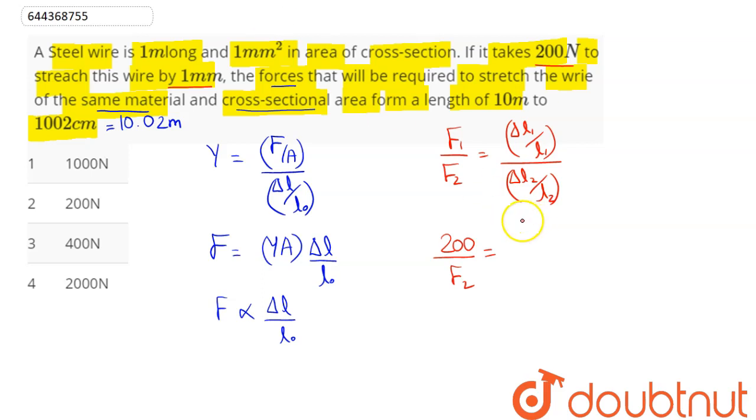That is 1 millimeter is 10 power minus 3 meter divided by additional length of 1 meter. This is 1 meter divided by new elongation of 0.02 meter.